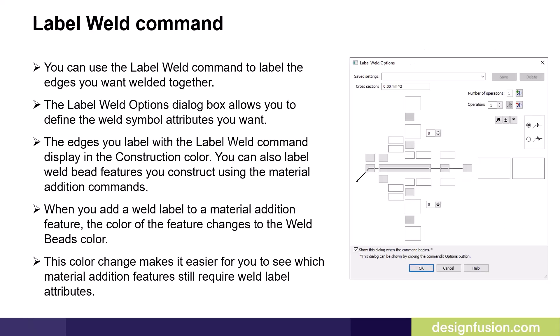You can add weld labels to weld bead features you construct using the protrusion commands. You can also add a weld label to a part edge. The weld label options dialog box allows you to define the weld symbol attributes you want. The edges you label with the label weld command display in the construction color. You can also label weld bead features you construct using the material addition commands. When you add a weld label to a material addition feature, the color of the feature changes to the weld bead's color. This color change makes it easier for you to see which material addition features still require weld label attributes.